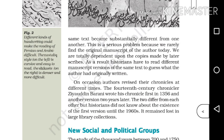On occasion, others revised their chronicles at different times. The fourteenth-century chronicler Ziauddin Barani wrote his chronicle first in 1356 and another version two years later. The two differ from each other, but historians did not know about the existence of the first version until the 1960s.